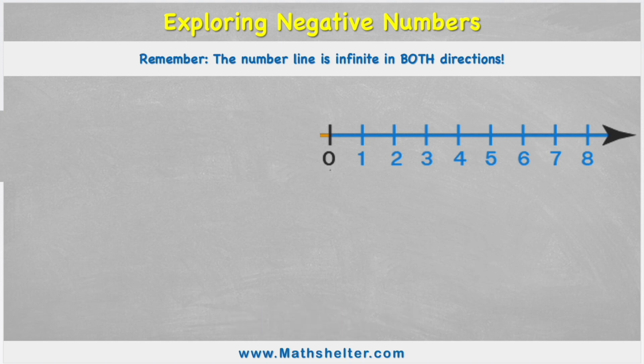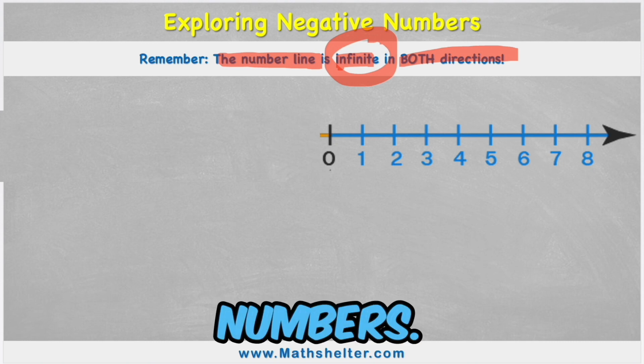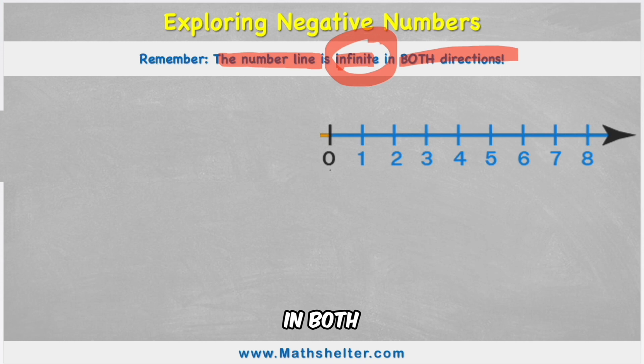Okay, what do we need to remember? We need to remember that a number line is infinite in both directions. What does infinite mean? Infinite means it can go on forever. So there's no end to the numbers. We could just keep writing bigger and bigger numbers in both directions.